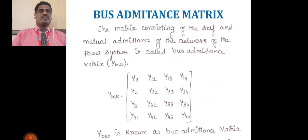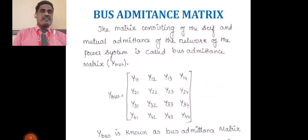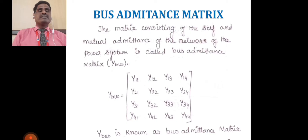For example, if you are considering one transmission line or transformer: for the transmission line, the individual load represents self-admittance, and two different lines connected at a single point represent mutual admittance. For a transformer, primary and secondary windings are present — primary winding and secondary winding each have some inductance and capacitance, but the primary and secondary are connected at the common point which is the core, and that core represents mutual admittance.